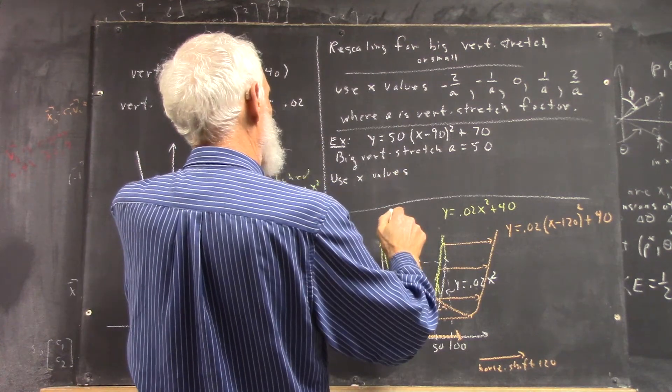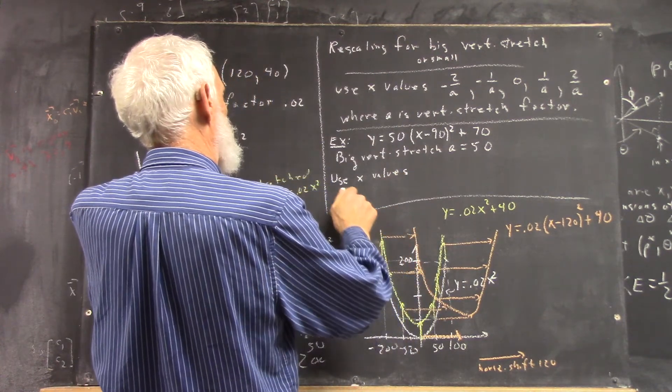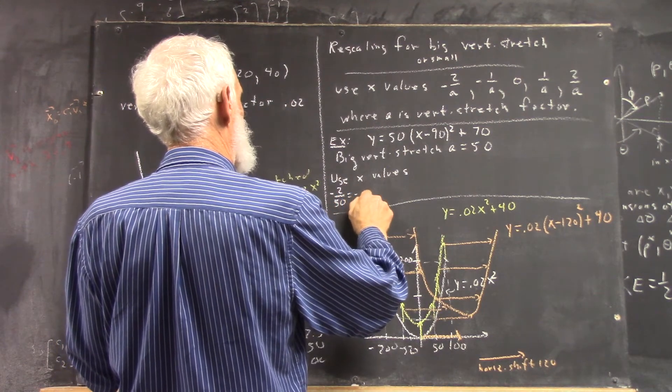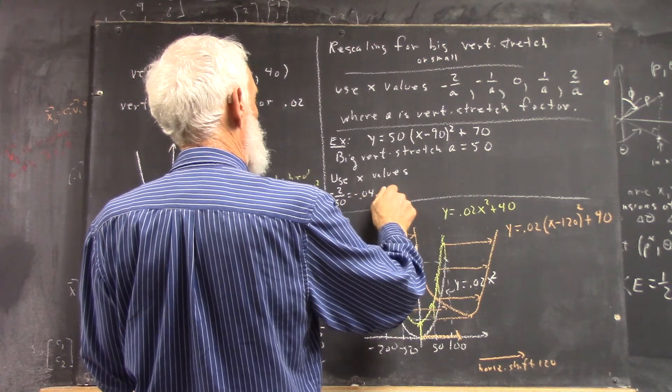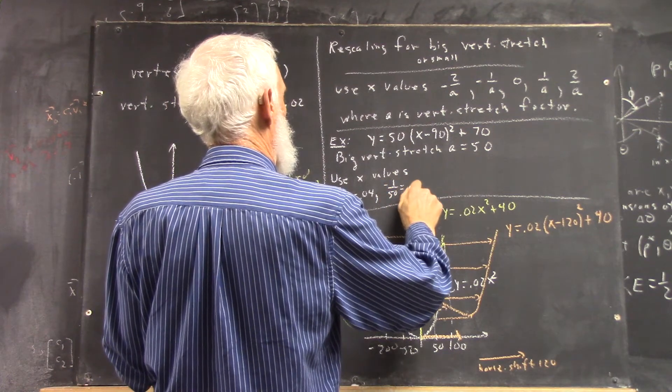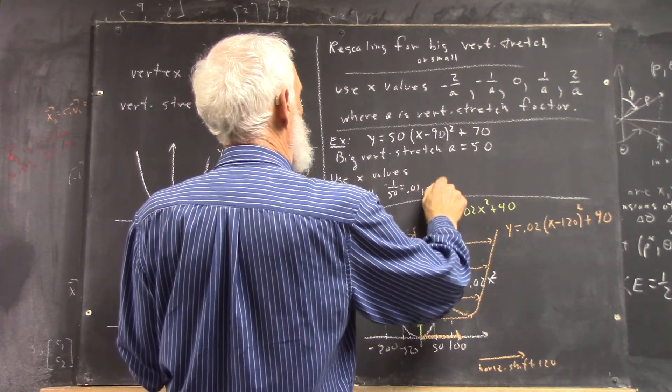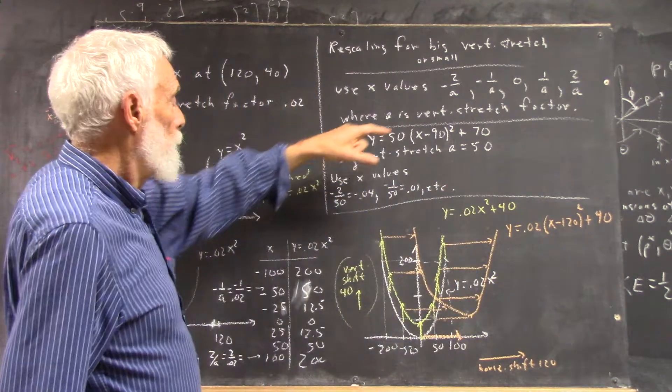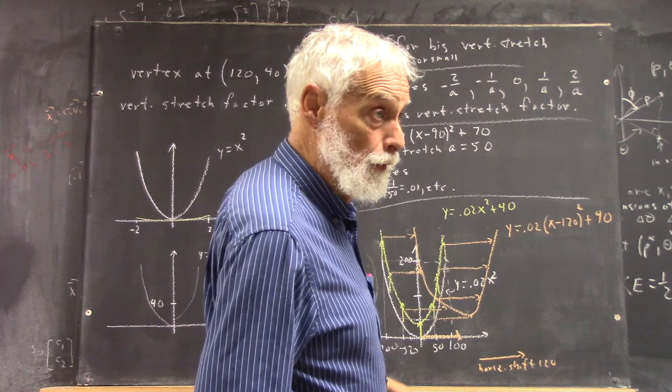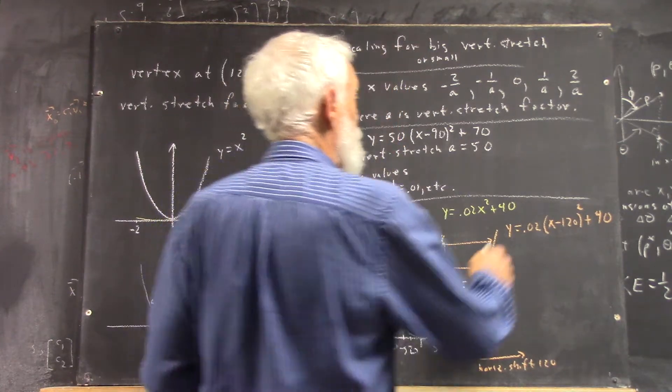So we just do 2 over a, negative 2 over a, negative 1 over a, and so forth, right? Then we'll get a table.